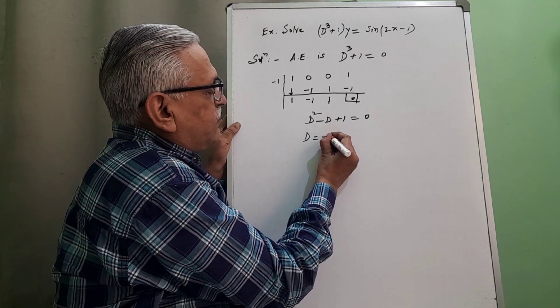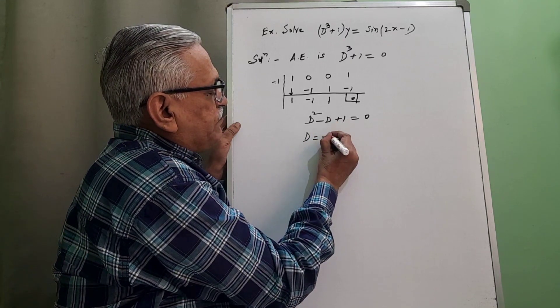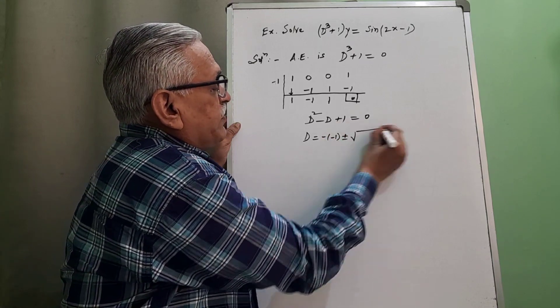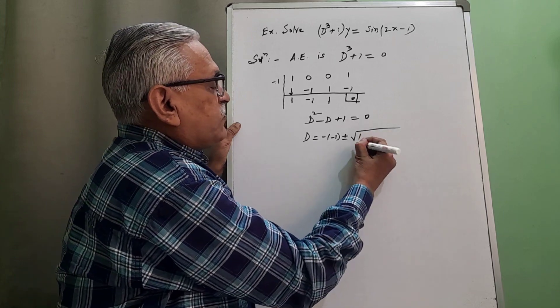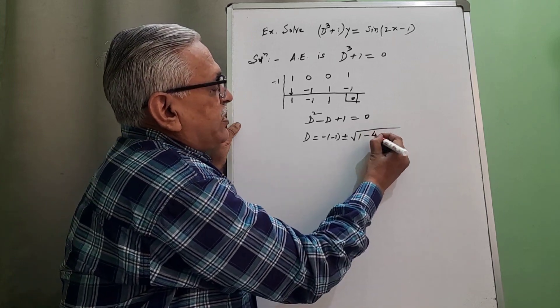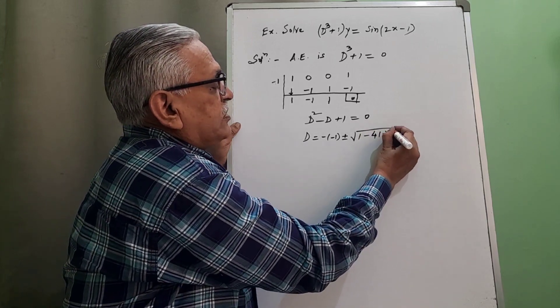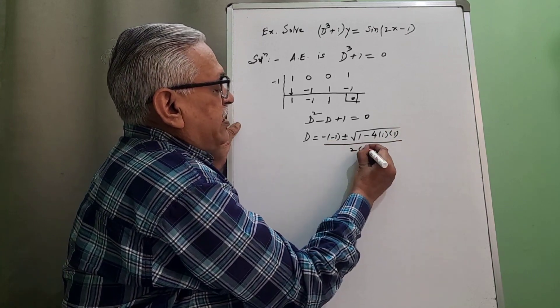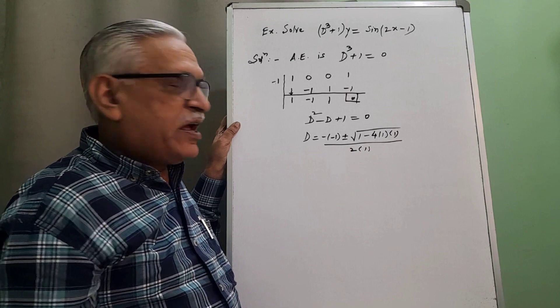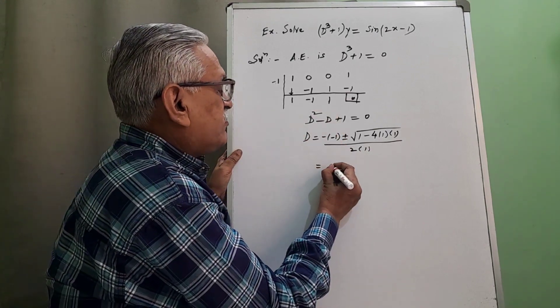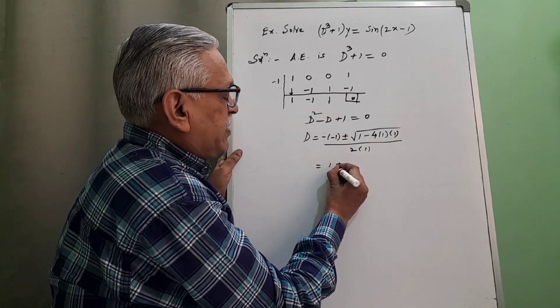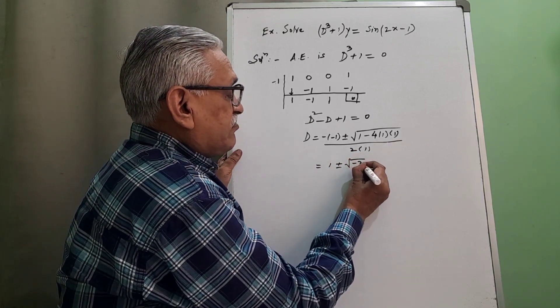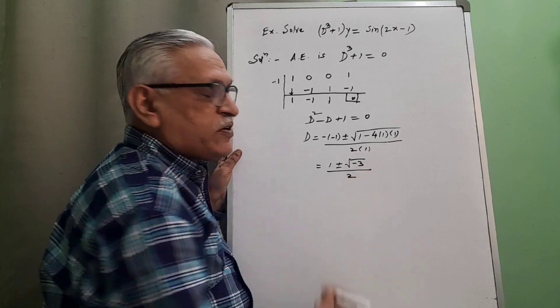Minus b, minus of minus 1, we get plus 1, plus minus root of b square, minus 1 square is 1, minus 4ac, 1 times 1, and divided by 2a. a is 1. And then it is 1 plus minus, 1 minus 4 we get root of minus 3, divided by 2. Square root of minus 1 is i.